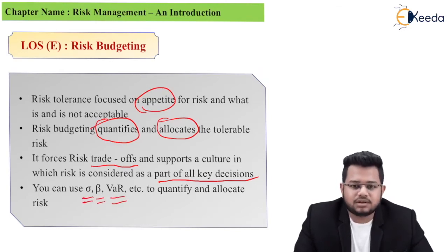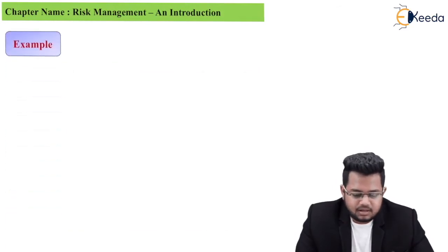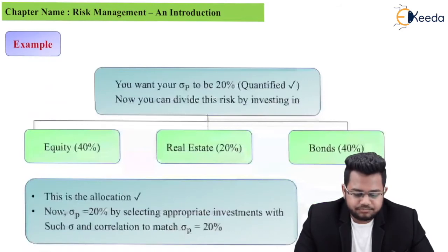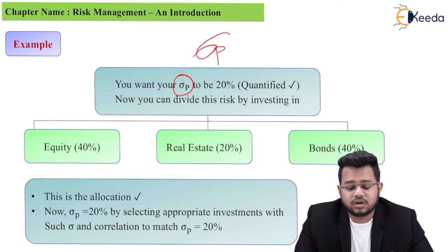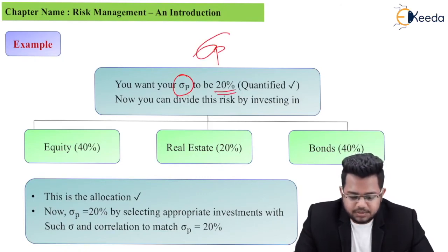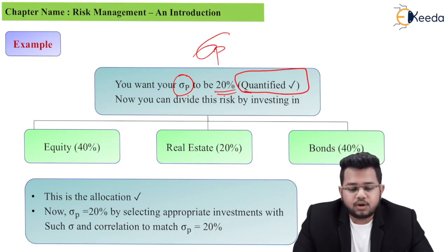These tools are used to quantify and allocate the risk. Standard deviation, beta, etc. — that is a part of our chapter which we will be studying ahead. Let's check one example of risk budgeting. You want your sigma p — the standard deviation of the portfolio, which is the total risk — to be 20%. So now you have quantified it. That was the first step of risk budgeting: quantify it. So now you have quantified 20%.